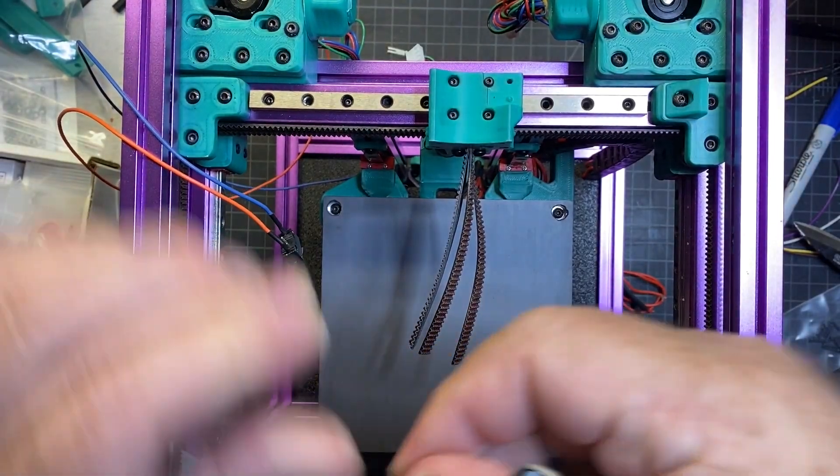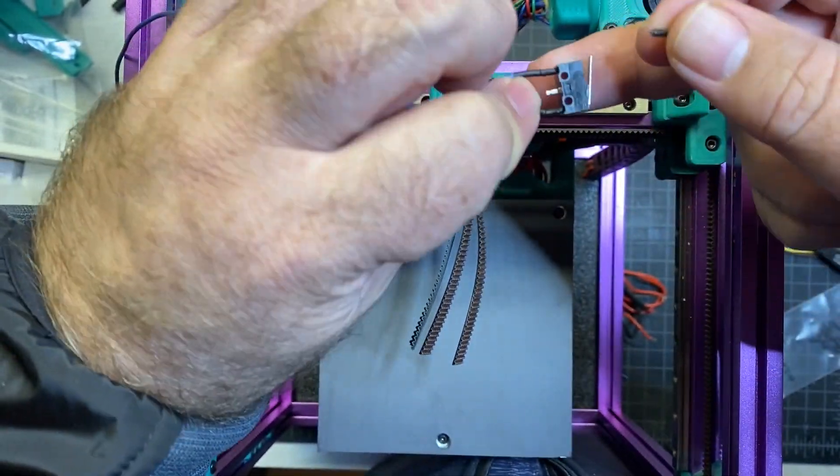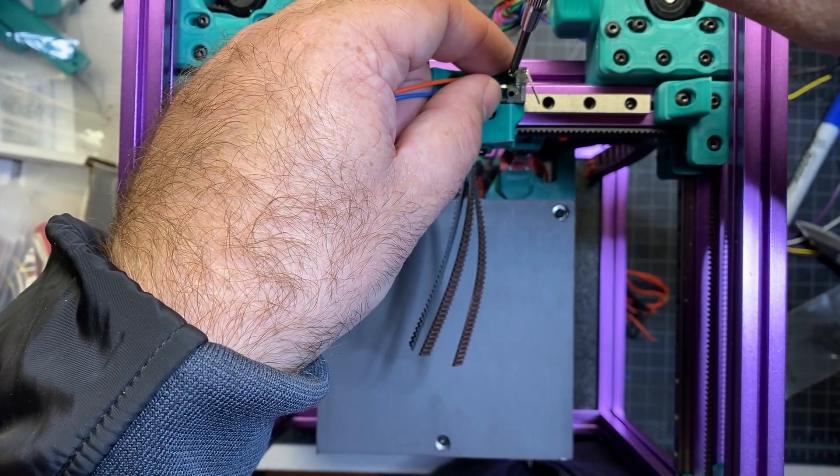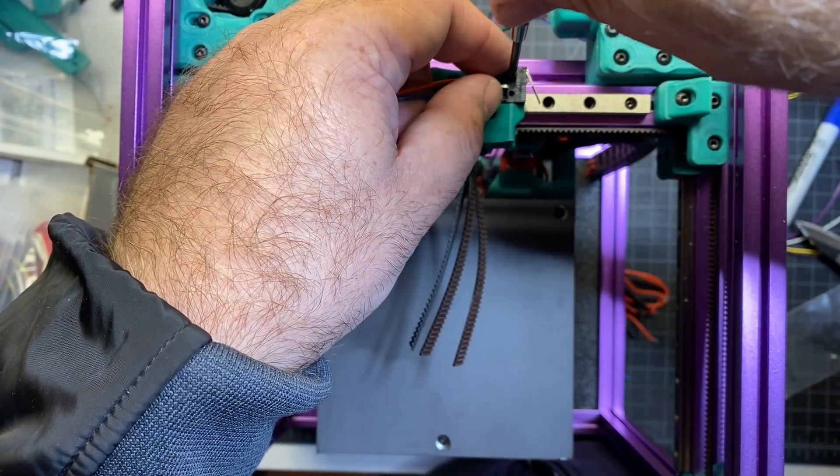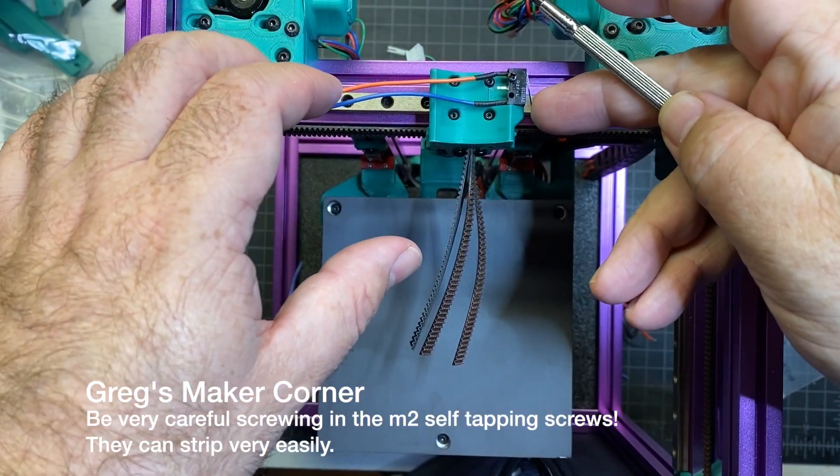I'm going to do the X one first. And this one fits right over the extrusion. I've got it in the right orientation now. And I'm just going to sink the screw. And that's all there is to it.